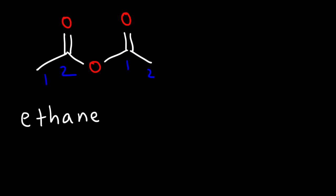In this video, we're going to talk about how to name acid anhydrides and nitriles as well. So let's start with a basic example. What is the name of this acid anhydride? So this particular anhydride is symmetrical. We have two carbons on both sides. Now whenever you have a two-carbon chain, you need to think of the word ethane.